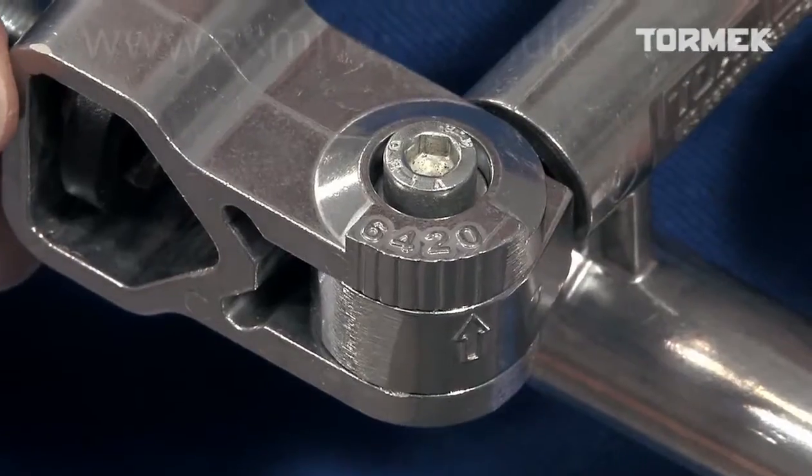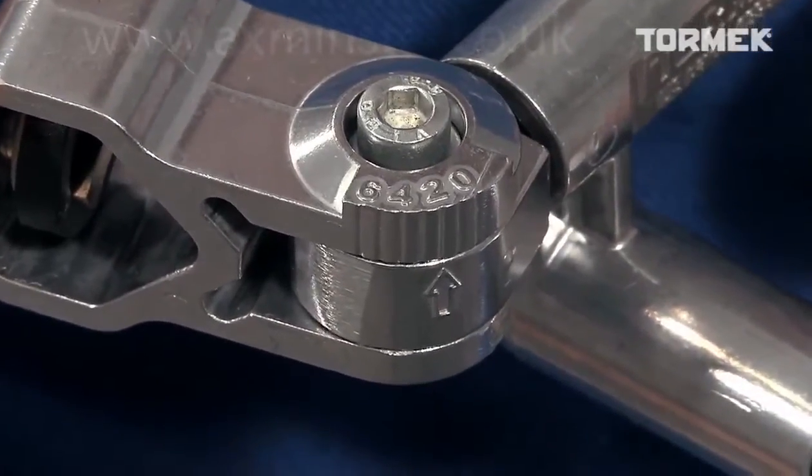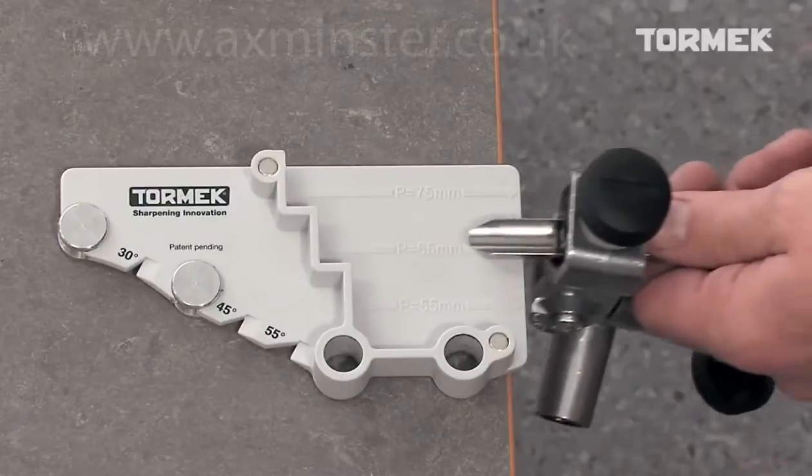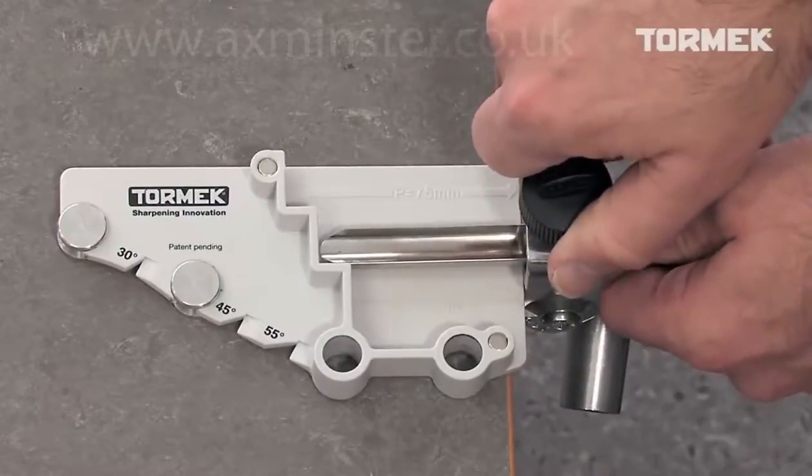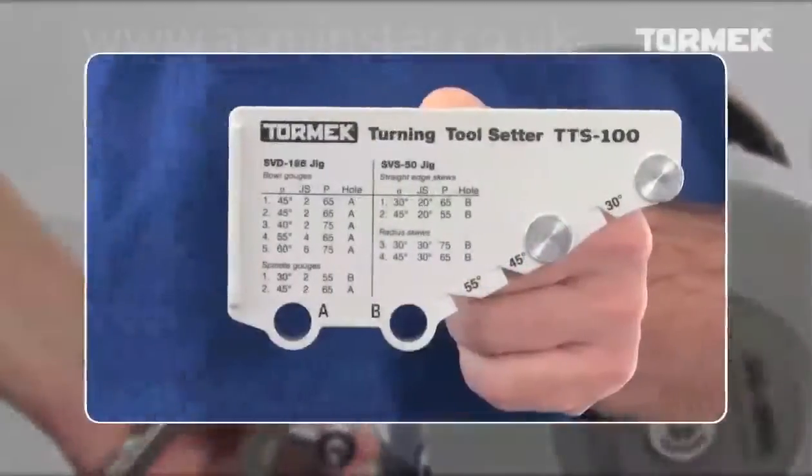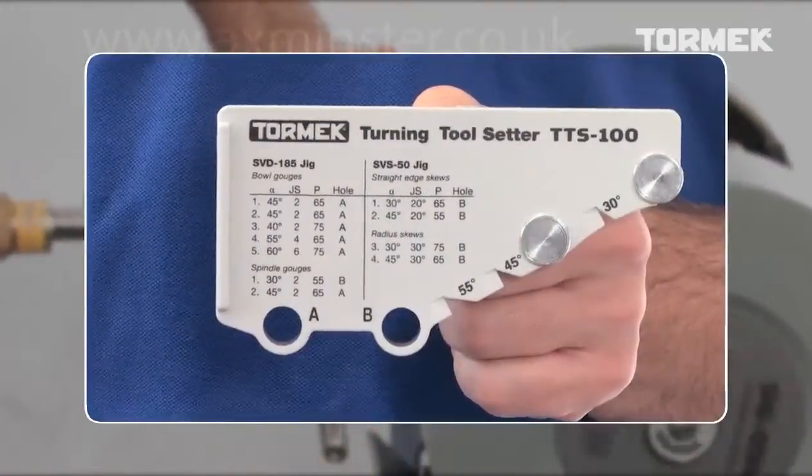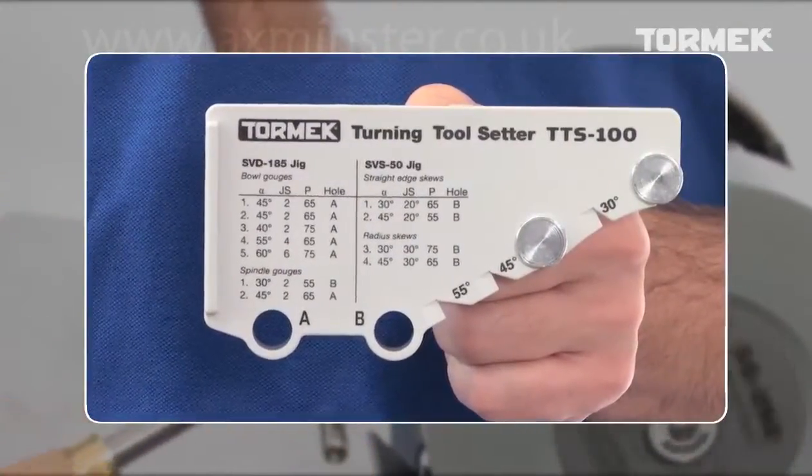By using the same setting and by mounting the tool with the same protrusion, you can exactly replicate the shape of the tool. With the Tormek Turning Tool Setter, TTS-100, you will have full control over the three factors that determine the shape.